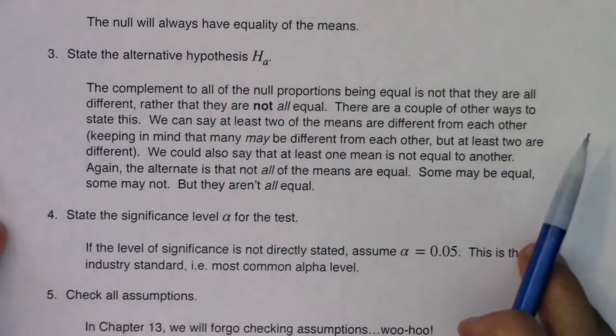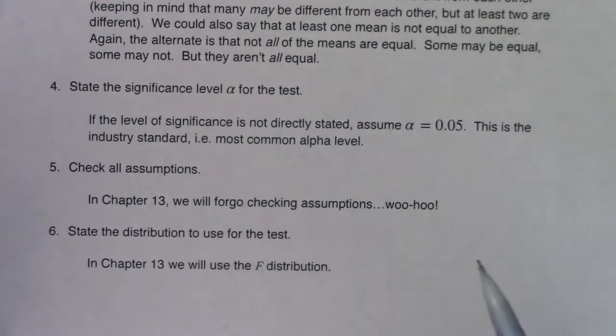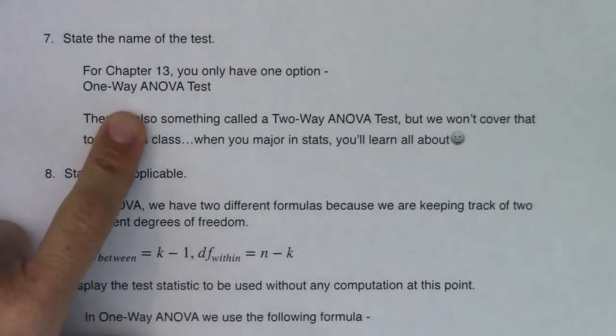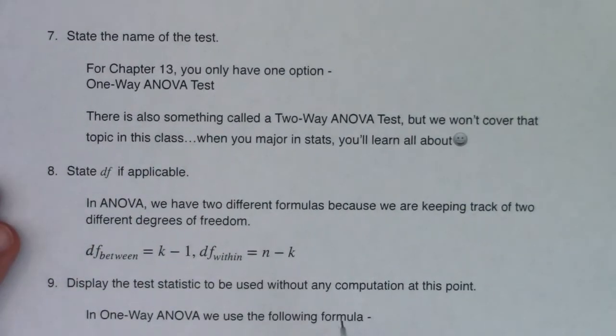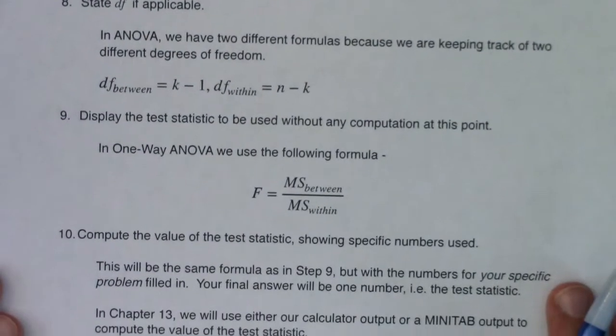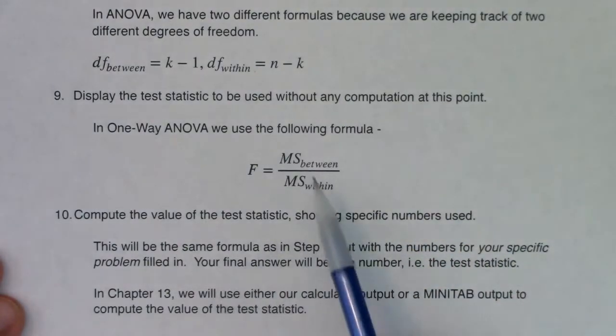Give me the alpha level, default to 0.05. In chapter 13 only, you don't have to check those assumptions, but you're more than welcome to. Tell me that we're working with the F distribution. State that distribution in step six. In step seven, you only have the one option - you're going to be running one-way ANOVA. There's something called a two-way ANOVA test, but we don't cover that in this class. For degrees of freedom, you have two different formulas that you have to keep track of - the betweens and the withins, and your calculator will put those out for you. The test statistic in one-way ANOVA is always this ratio of the mean squares between to the mean squares within. In step 10, you're just going to plug in your numbers that you're going to get from your calculator output. For chapter 13, we're either going to use our calculator output or a Minitab output to compute the value of the test statistic.